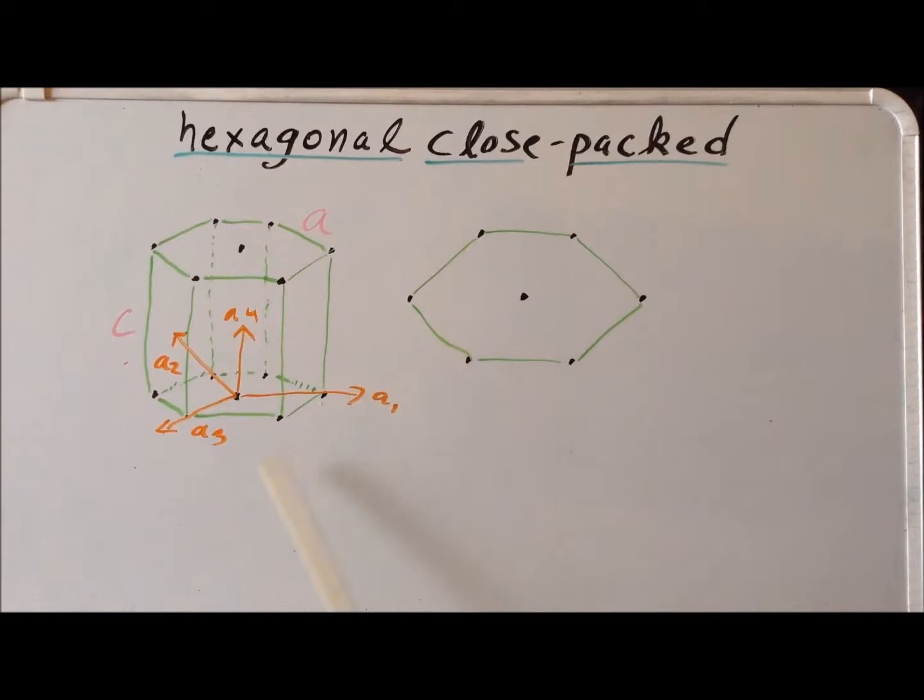and the distance in this direction along vector A3 is the distance A. But the fourth vector, A4, in our diagram is orthogonal to A1, A2, and A3. So it's up and down in our diagram, and the projection in this direction is a distance C.